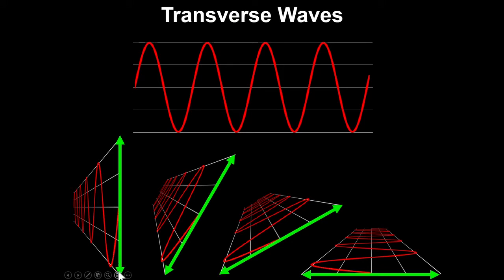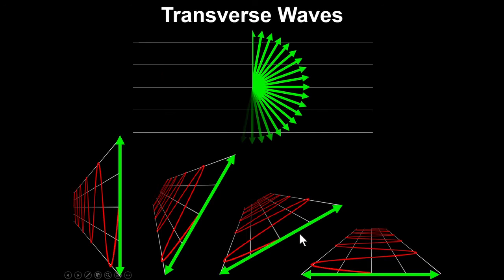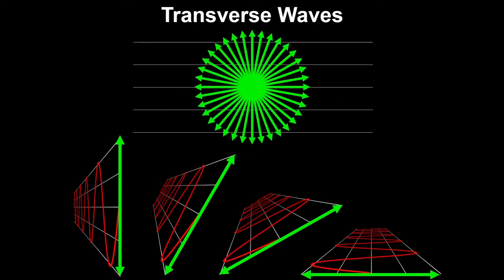We draw these little arrows going up and down just so we can really see that this is a vertically oriented wave, a horizontally oriented wave, or any orientation. We're not limited to just 360 degrees — transverse waves could be oriented in any angle whatsoever.